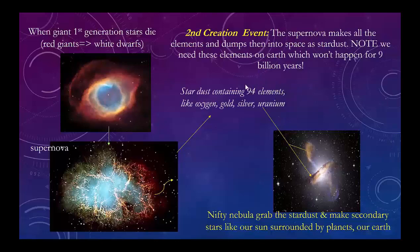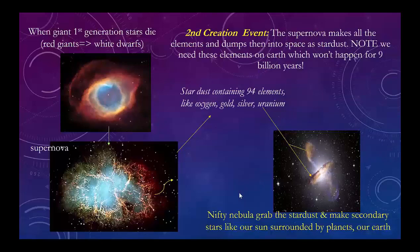Why 94 elements? The only reason to get 94 elements is to put them into our Earth for us. When they make a second-generation star, they'll use up to 26. The stardust is collected by the nebula — these are star formers. In the center it makes a second-generation star with a magnetizable iron core, which is going to be important later for magnetizing the Earth. The protoplanetary disk around it is where all the essential elements and planets are made. Our planet got all 94 essential elements because they are essential.